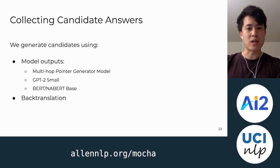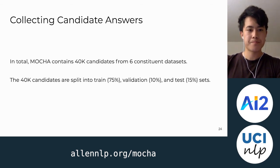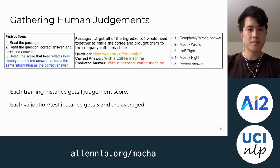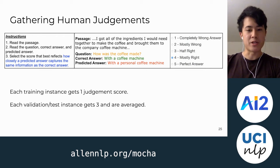Candidates are generated in one of two ways: by taking model outputs, or by back-translating the reference. In total, MOCA contains 40,000 candidates, which we split into training, validation, and testing sets. Once we have these candidates, we gather human judgment scores using an interface. Each training instance gets one judgment score, and each validation and test set instance gets three, which are then averaged.